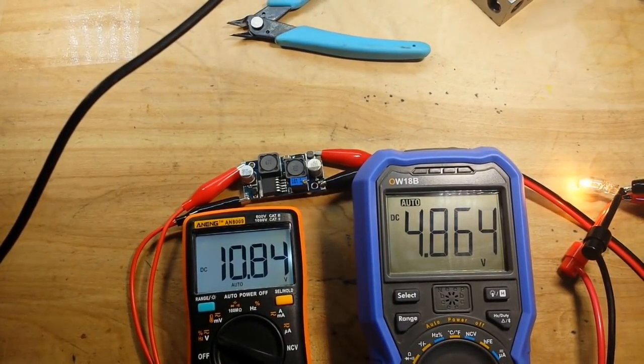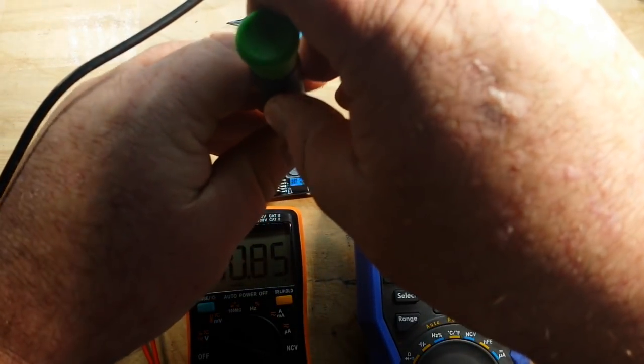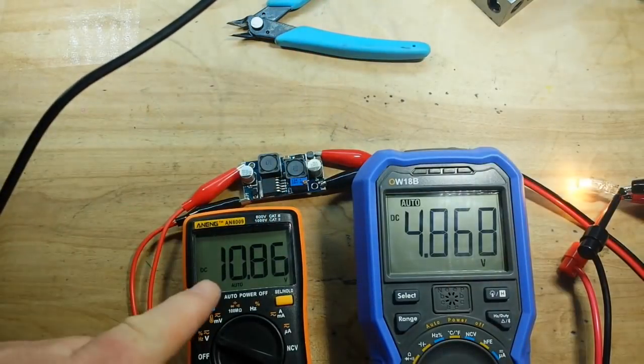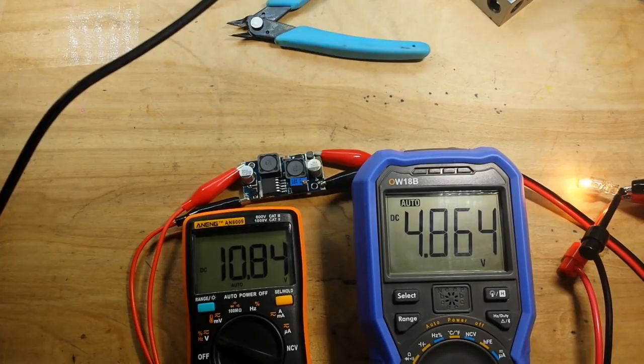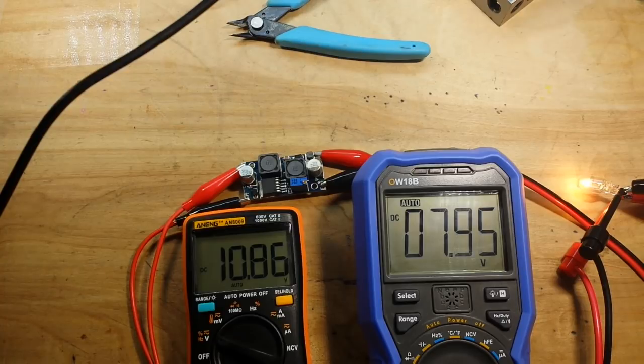Pretty simple. Alright, let's change things around, let's put it in buck mode. Let's just leave it right here at 10 volts, and we're going to take our voltage up to say 15 volts. Slowly getting up to 15. Hey look at that, I almost landed right on it.